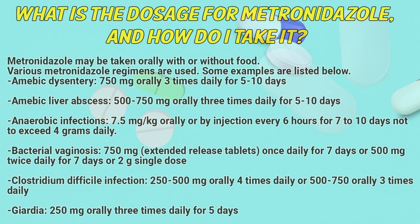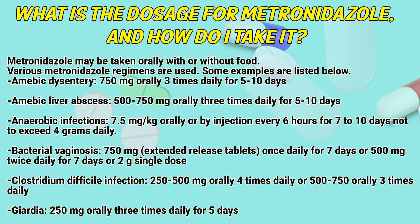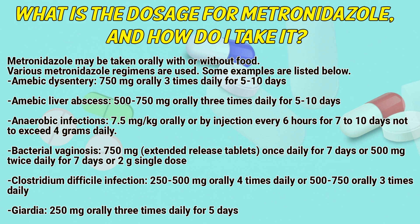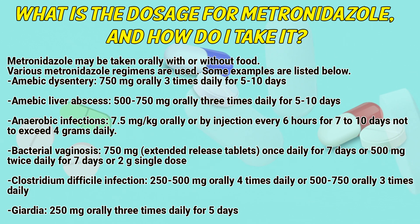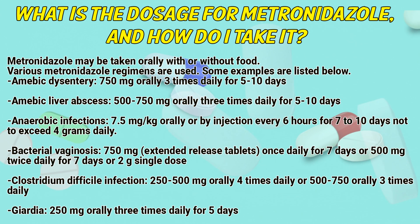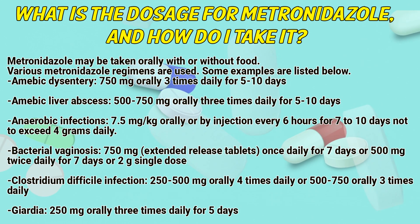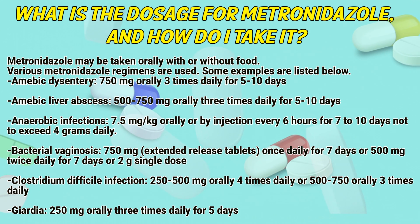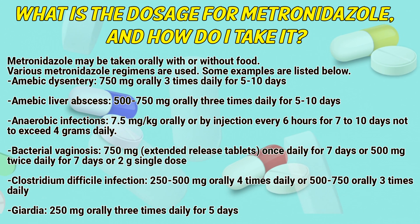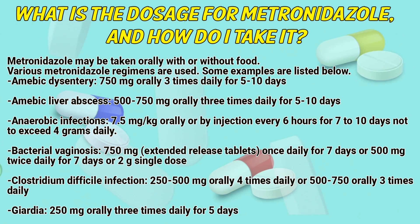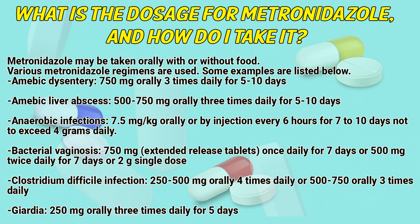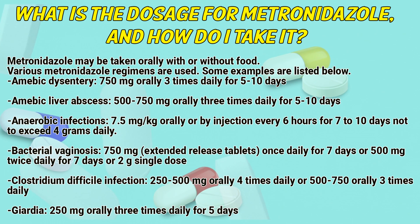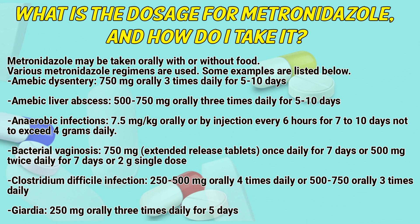What is the dosage for metronidazole and how do I take it? Metronidazole may be taken orally with or without food. Various metronidazole regimens are used. Amoebic dysentery: 750 mg orally 3 times daily for 5–10 days. Amoebic liver abscess: 500–750 mg orally 3 times daily for 5–10 days. Anaerobic infections: 7.5 mg per kg orally or by injection every 6 hours for 7–10 days, not to exceed 4 g daily.